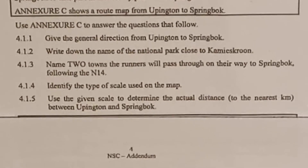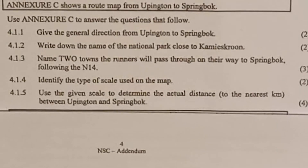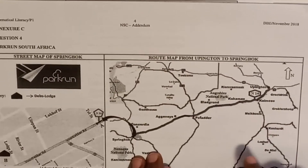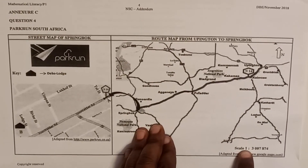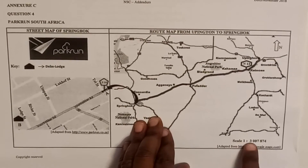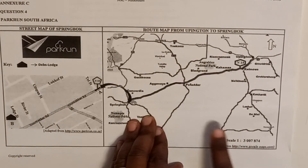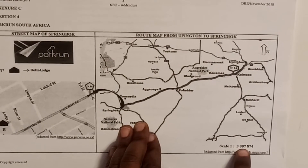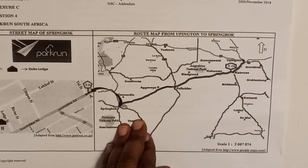Question 4.1.5: use the given scale to determine the actual distance to the nearest kilometer between Uppington and Springbok. The scale tells us that 1 unit on the map represents 3,237,874 of those same units on land. So 1 millimeter on the map equals 3,237,874 millimeters on land.